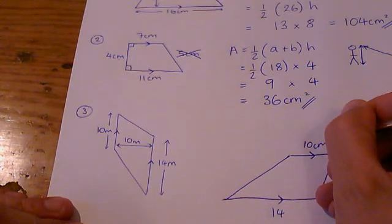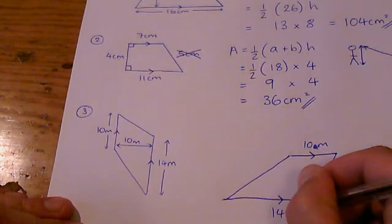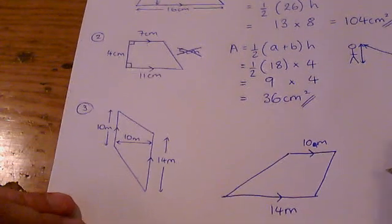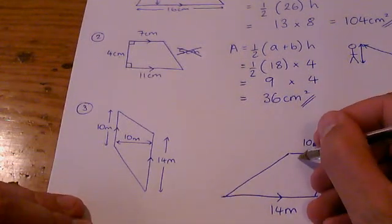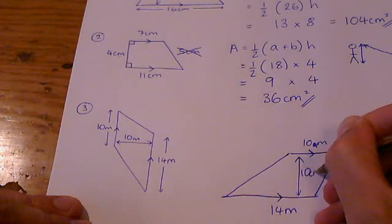Oh, I've accidentally written centimetres there. These are metres that we were talking about. And 10 metres is the perpendicular height.